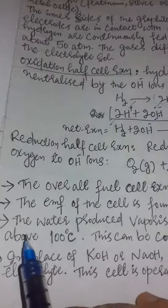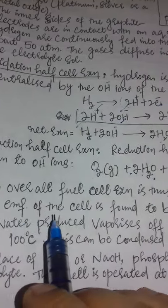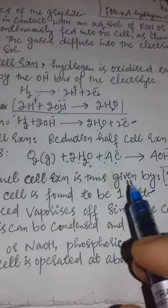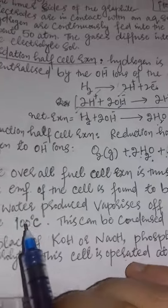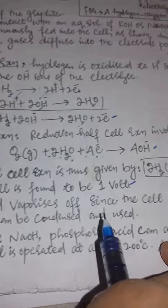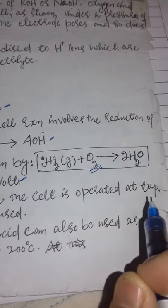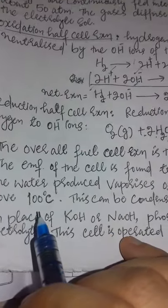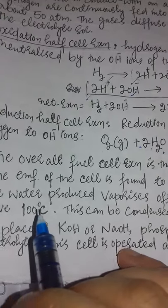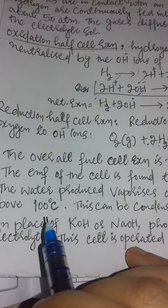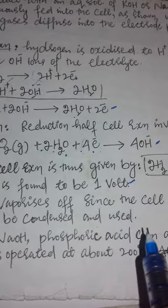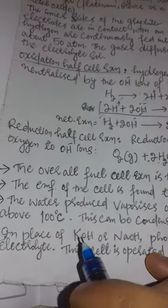One important thing to remember: the water produced vaporizes since the cell is operated at a temperature above 100 degrees Celsius. This water can be condensed and reused. So the water you get can be condensed and used again — keep this point in mind.